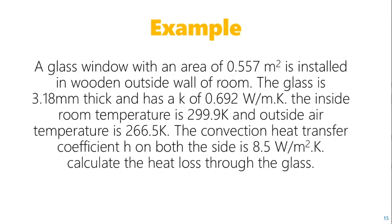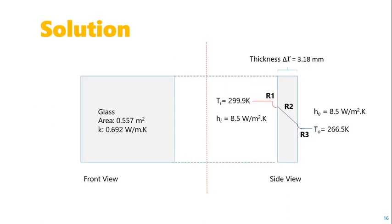To explain this with an example: a glass window with an area of 0.557 m² is installed in a wooden outside wall. The glass is 3.18 mm thick with thermal conductivity of 0.692 W/(m·K). The inside room temperature is 299.9 K and the outside air temperature is 266.5 K. The convection heat transfer coefficient on both sides (inside and outside) is 8.5 W/(m²·K). We need to calculate the heat loss through the glass.